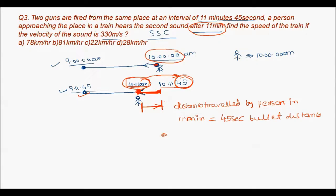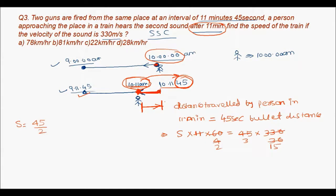Speed of person = (330 × 45) / 660 = 14850 / 660 = 45/2 m/s. Converting to km/h: (45/2) × (18/5) = 45 × 18 / 10 = 810/10 = 81 km/h. So the speed of the train is 81 km/h.